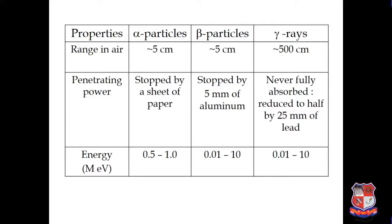When we consider penetrating power — that means the ability of alpha particle, beta particle, and gamma rays to pass through a particular substance: alpha particle is easily stopped by a piece of paper. Beta particle is easily stopped by a 5 mm aluminum sheet. Gamma rays are never fully stopped or fully absorbed — they are reduced to half by 25 mm of lead.